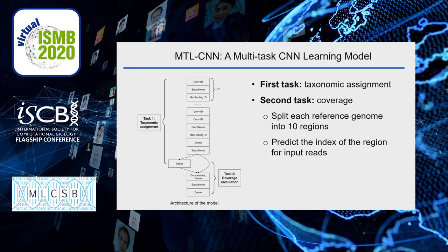Therefore, we developed MTL-CNN, a multi-task CNN learning model, which can do taxonomic assignment for human viruses and can do coverage calculation for assigned hits. For the first task, in the architecture, we used a modified and simplified VGG net. Besides, we added batch normalization layers and max pooling layers to increase the robustness of our model for tolerating high mutation rates in various genomes.